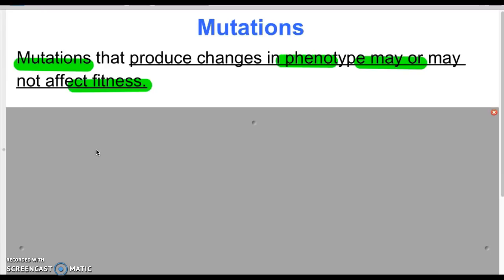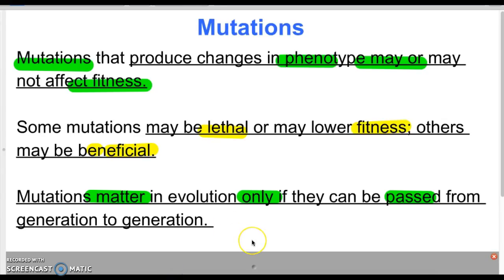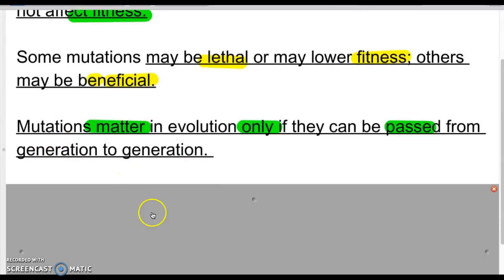The first primary reason for unique random variations in a population is mutations. Mutations can produce changes because they occur in our genes, and if our genes code for proteins, that can change the trait, so our phenotype may look different. Some mutations can be lethal and lower fitness, meaning the organism is not able to survive and reproduce. Some mutations are beneficial and best fit for the environment, allowing the organism to survive, reproduce, and pass down those mutations to the next generation.